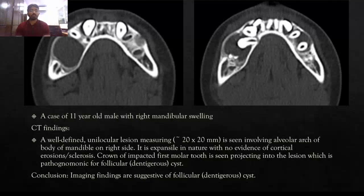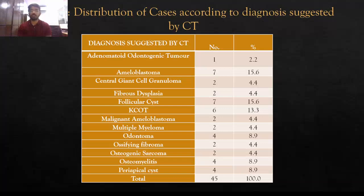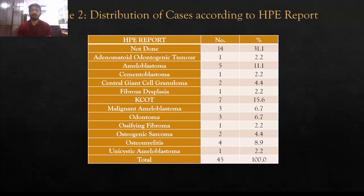Case 7: an 11-year-old male patient with right mandibular swelling. CT shows a well-defined unilocular lesion involving the body of the mandible on the affected side, with no evidence of cortical erosion or sclerosis. The crown of an unerupted tooth is seen within the lesion. The lesion was depicted with ossifying features on CT and the patient underwent biopsy.